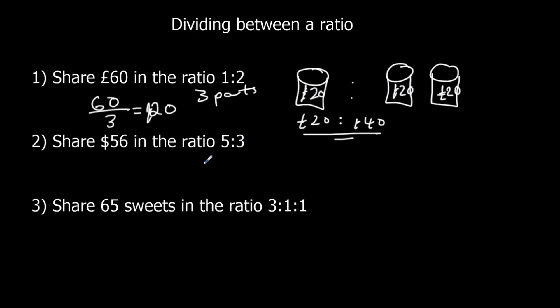Ratio 5 to 3. So 2, 3, 4, 5 to 1, 2, 3. So there are 8 parts. 56 divided by 8. That's 7. So 7 dollars in this case. So each one of these is 7 dollars.